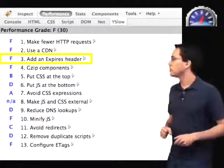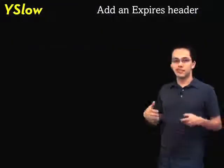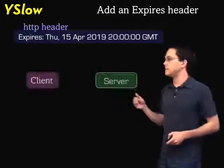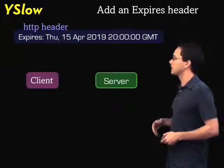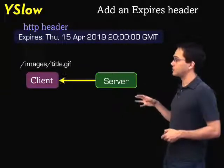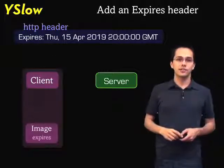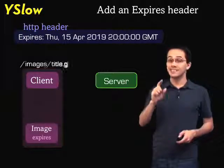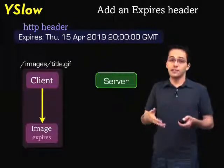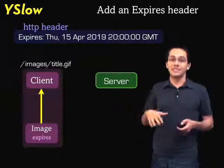The third thing we can do to increase performance is add an expires header, which is basically a date that says this particular asset is valid until a certain time. Here's how it works: the client requests an image from the server. The server returns that image along with the expires header. The client stores that in its local cache. Next time it requests the same image, it checks its local cache — if the asset is still fresh, it pulls from local cache without touching the server at all.